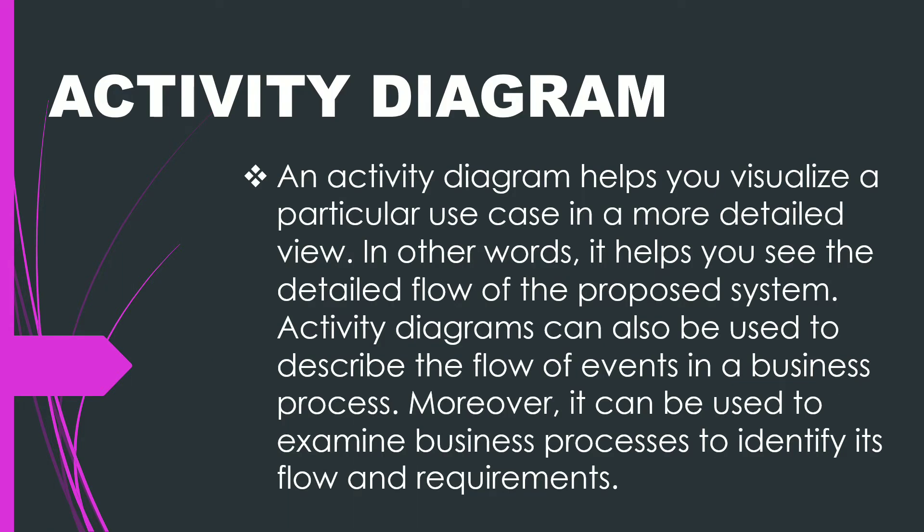What is Activity Diagram? Activity Diagram is a diagram that helps to visualize a certain use case at a more detailed level. It illustrates the flow of activities through a system. It can also be used to depict a flow of events in a business process. Moreover, it can be used to examine business processes in order to identify its flow and requirements.